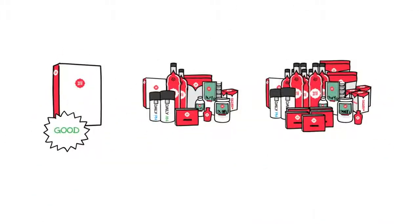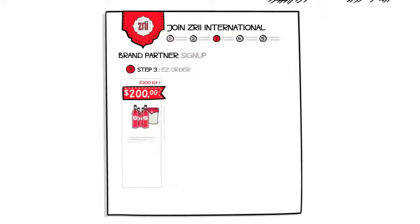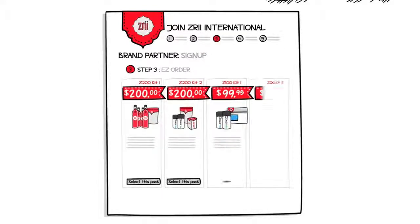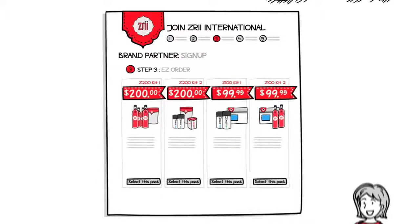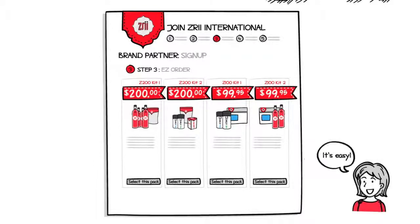So the choice is yours. Good, better, or best? Once you've made your decision, it's time to set up your monthly EZ order. We call this an EZ order because it's, you guessed it, easy.